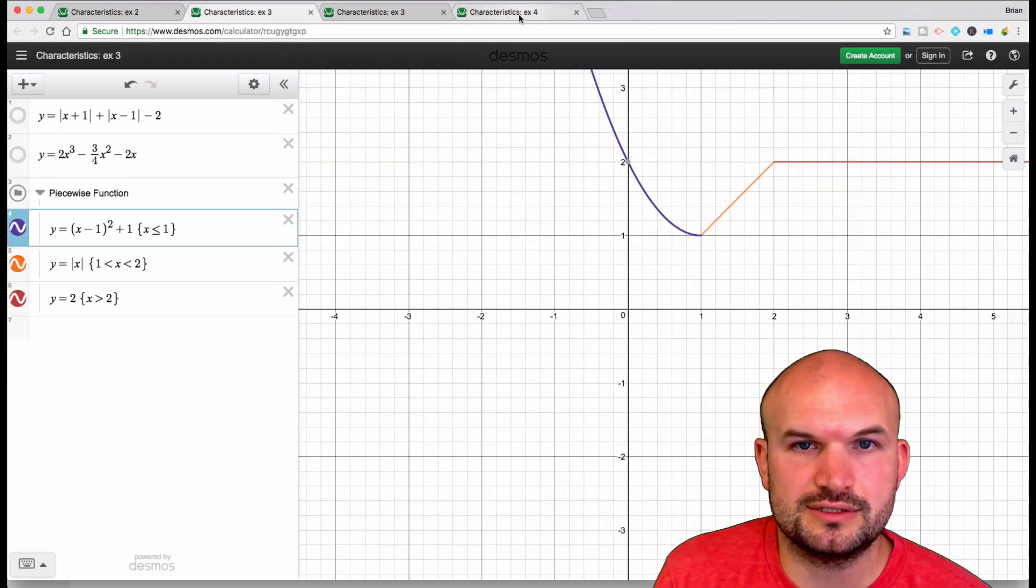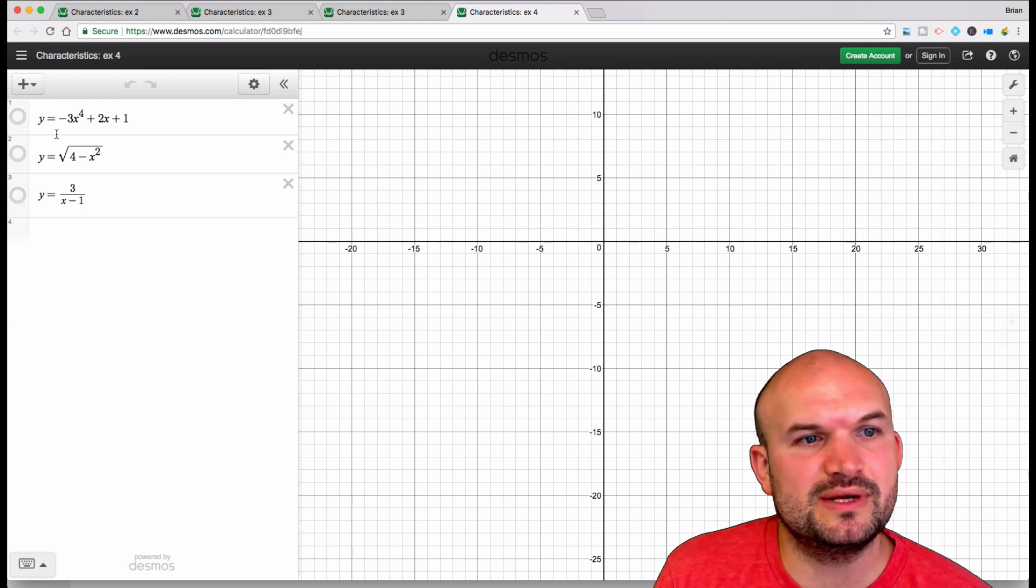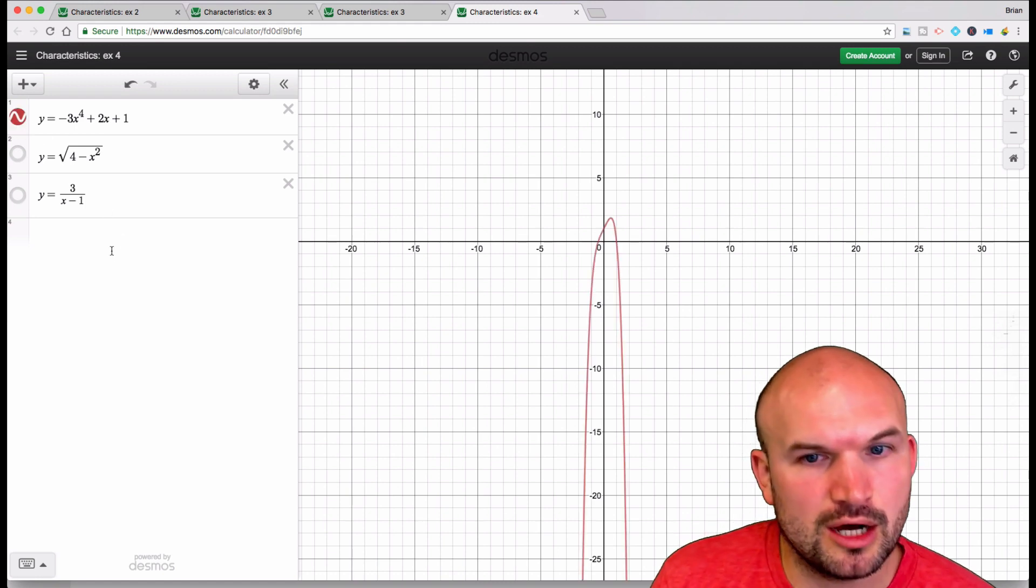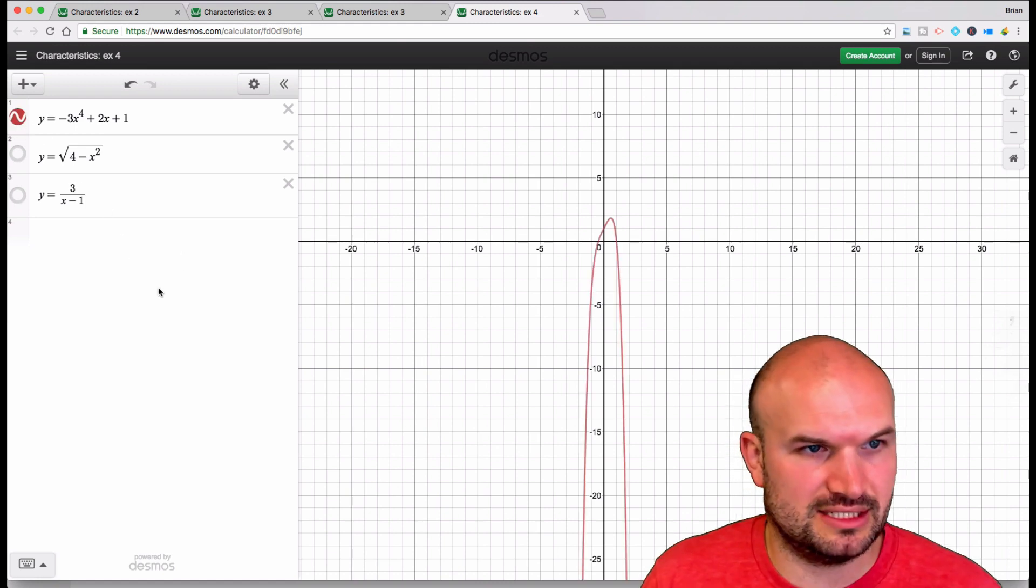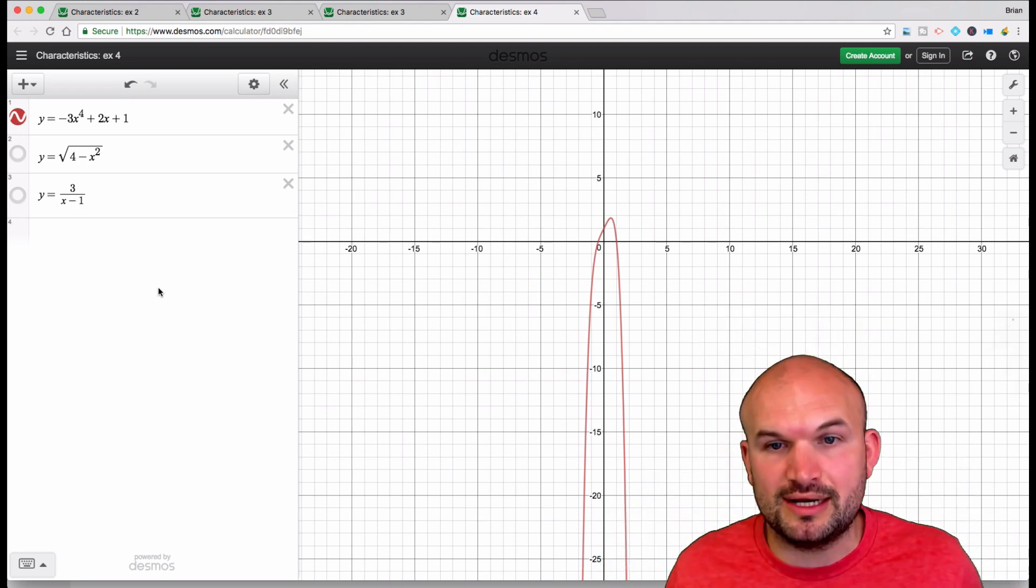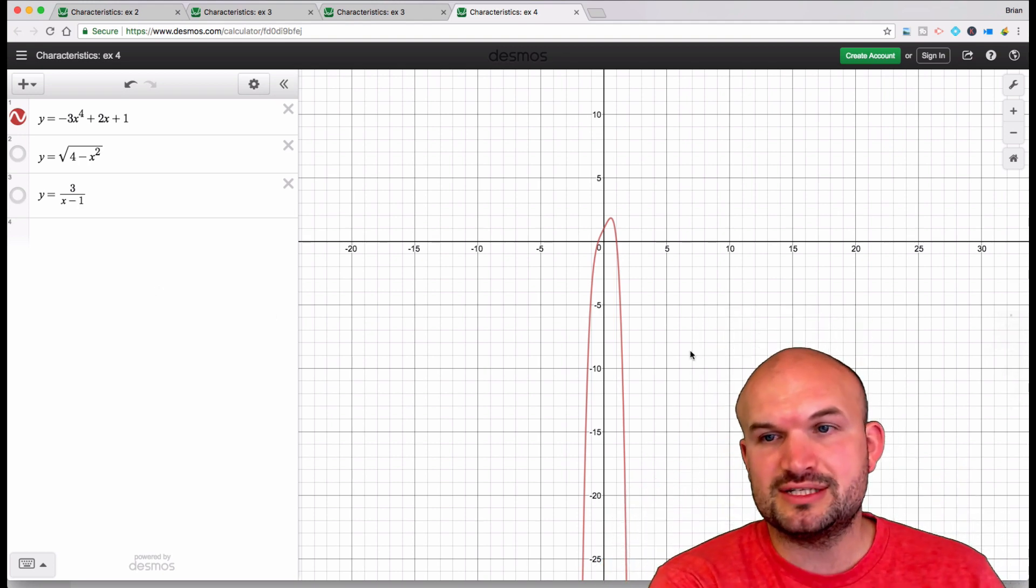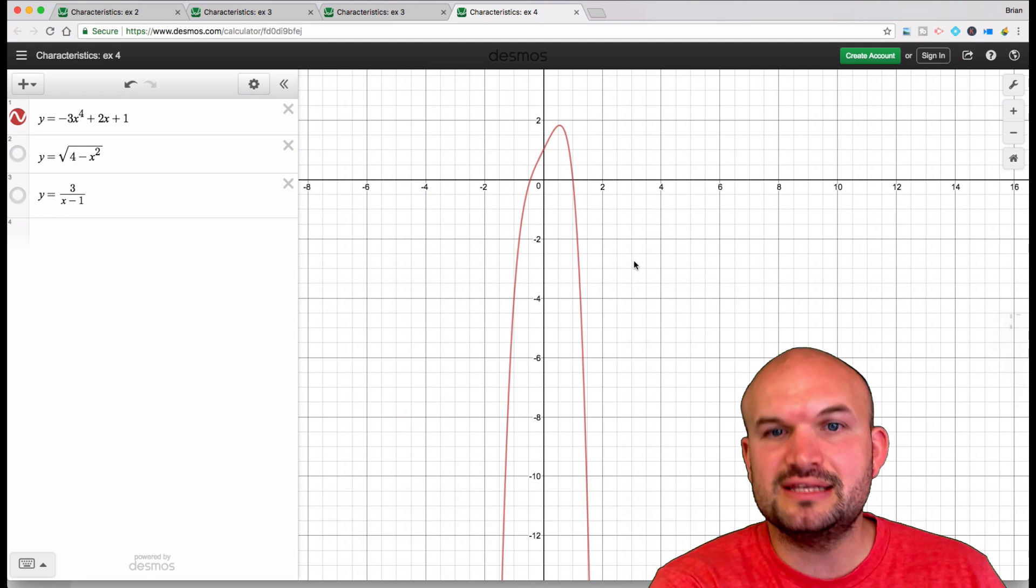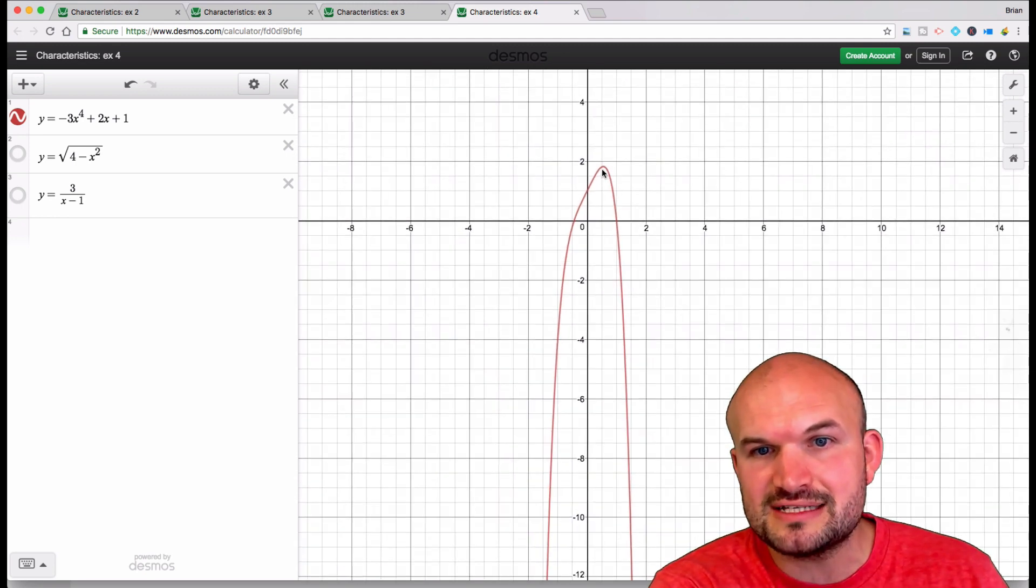So first one here is, let's just go to example four. The first one here is a polynomial, y equals -3x to the fourth plus 2x plus 1. An important thing that we really just need to look at here is you can see that the graph obviously has a maximum value.